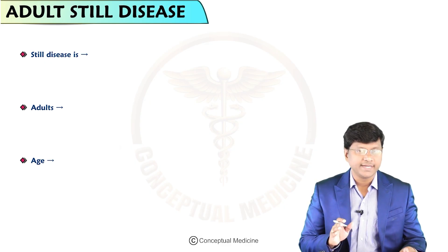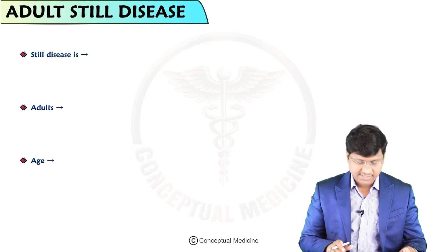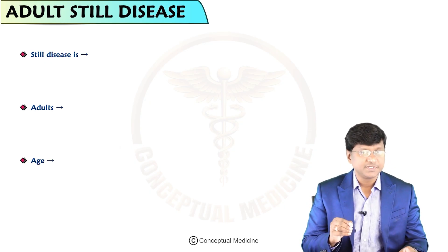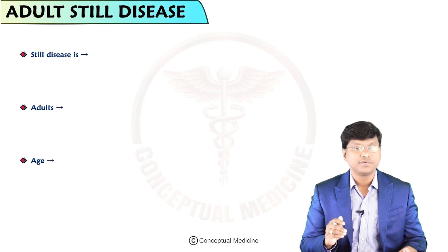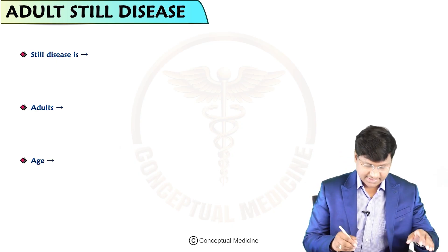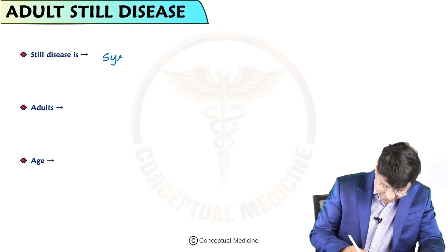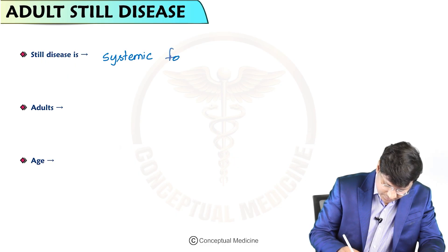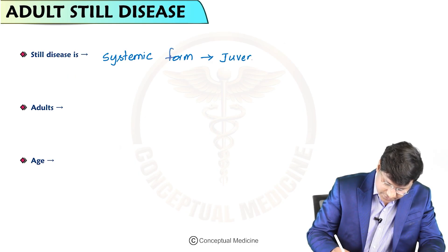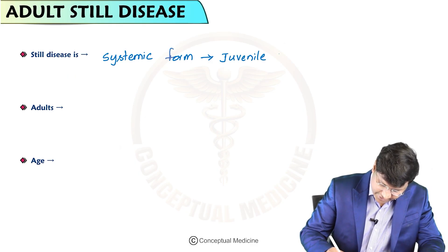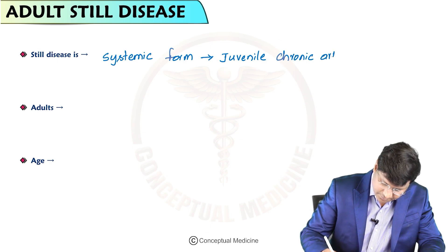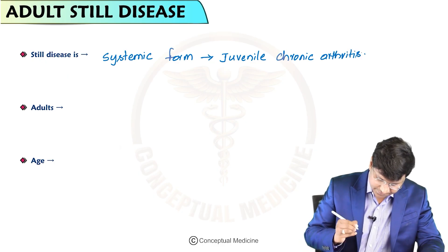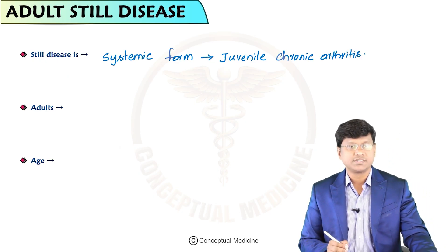How do we define Adult Still's Disease? This particular Still's disease is a systemic form of juvenile chronic arthritis. That is what your Still's disease is.